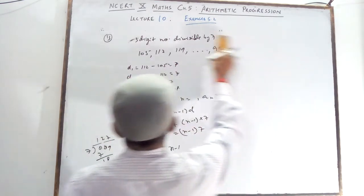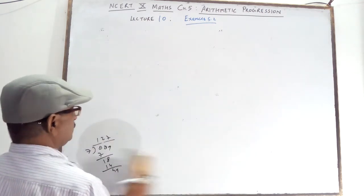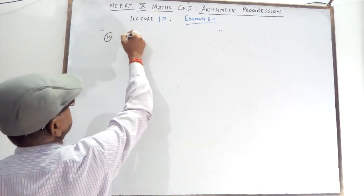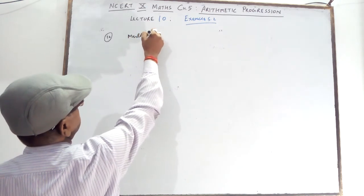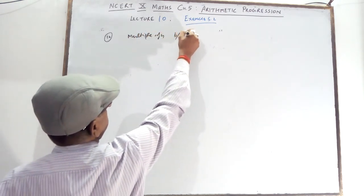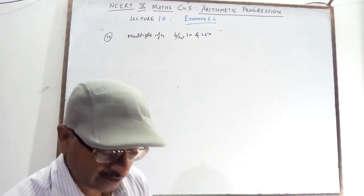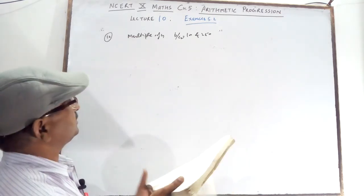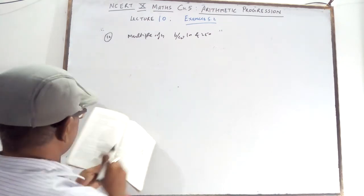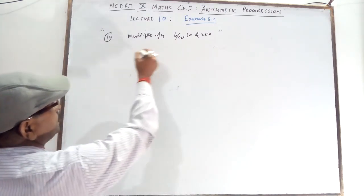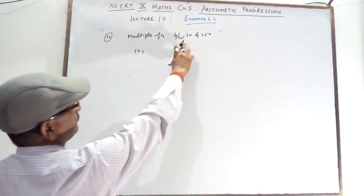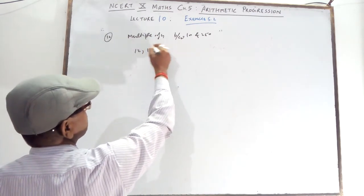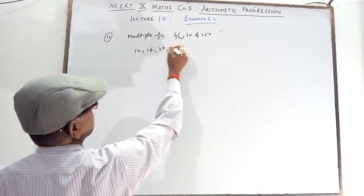Question number 14: How many multiples of 4 lie between 10 and 250? Look at the table of 4: 4×3 is 12, 4×4 is 16, 4×5 is 20, and so on. The first multiple of 4 greater than 10 is 12.